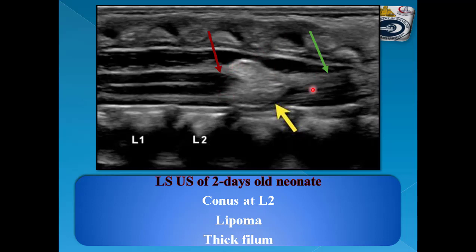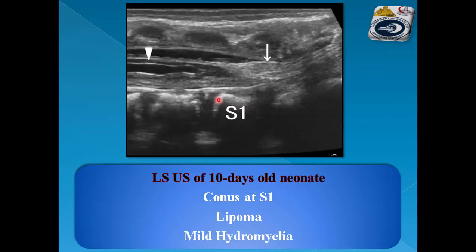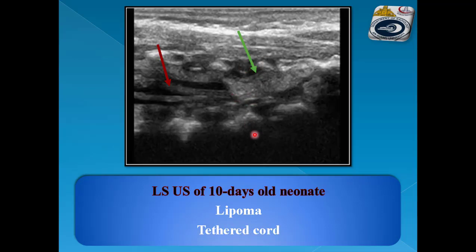This example on LS ultrasound shows the conus at L2 at its normal position, yet it is buried within a spinal lipoma, and there is an associated thick filum terminale. Another example: the lipoma — the cord ends at S1 denoting tethered cord, and there is mild hydromyelia with mild dilatation of the central spinal canal. Another example shows the spinal lipoma with a tethered cord.